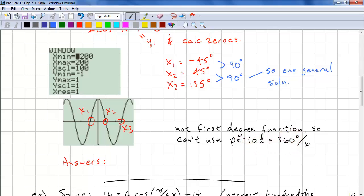Note this is not a first degree function, so we can't use the period simply as 360 degrees divided by b. So our answer is 45 degrees using the principal angle, plus 90 degrees times n, n being the set of all integers. And note this is normally the period, but this is not the case.